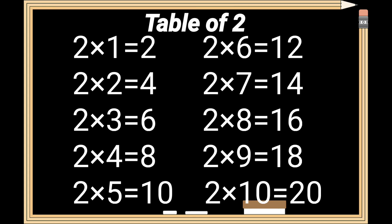Table of 2 review. 2 times 1 is 2. 2 times 2 is 4. 2 times 3 is 6. 2 times 4 is 8. 2 times 5 is 10. 2 times 6 is 12. 2 times 7 is 14. 2 times 8 is 16. 2 times 9 is 18. 2 times 10 is 20.